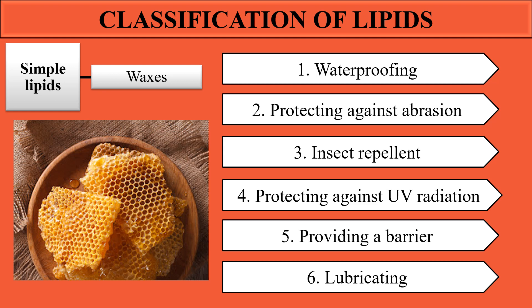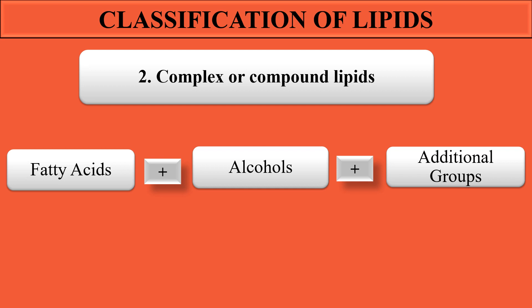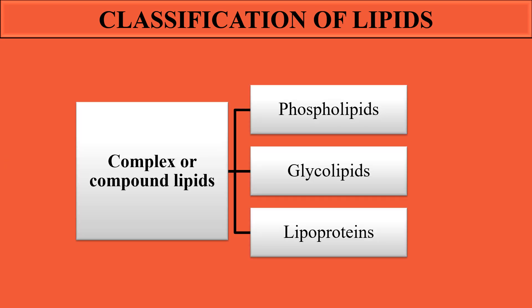Now let's look at complex and compound lipids. As the name indicates, complex and compound lipids are a combination of more than two molecules. They are made up of fatty acids combined with alcohol, to which additional groups are also attached. Based on these additional groups, compound lipids are classified into phospholipids, glycolipids, and lipoproteins.